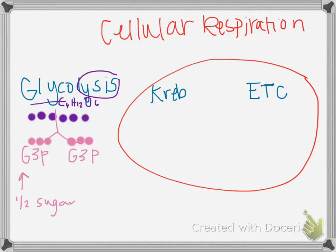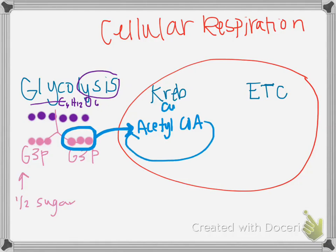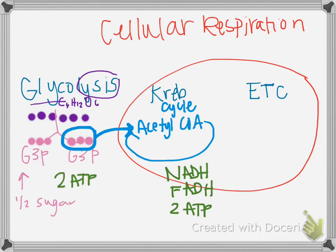Now we're going to take that G3P and put it into the mitochondria and convert it into acetyl-CoA. And that's going to go through a cycle — the Krebs cycle. The point is it's going to make lots of electron carrier molecules: NADH and FADH. And it makes two ATP, and glycolysis made two ATP as well. Those electron carriers are going to go to the electron transport chain.